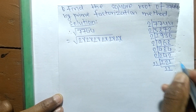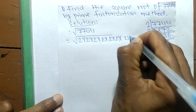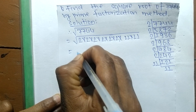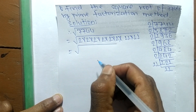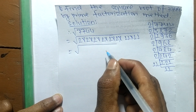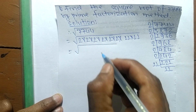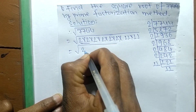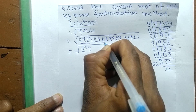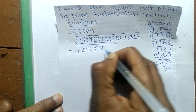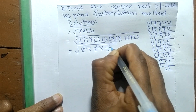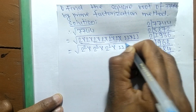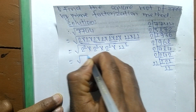So now we are finding the square root. From these prime factors we make squares: 2 into 2 is 2 squared, 2 into 2 is 2 squared, 2 into 2 is 2 squared, and 11 into 11 is 11 squared.